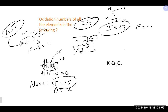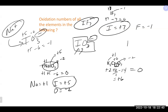For potassium dichromate (K₂Cr₂O₇): oxygen is −2 times seven = −14. Potassium is group 1, so each potassium is +1. The compound is neutral, so all oxidation numbers must sum to zero. Two potassiums give +2, and +2 + (2×Cr) + (−14) = 0, so 2×Cr = +12, meaning each chromium carries a +6 oxidation state. Therefore: potassium is +1, chromium is +6, and oxygen is −2.